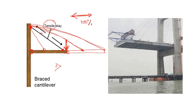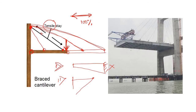With cables, we have eliminated the problem of the increasing cross-section depth. We have also eliminated the problem of the effective length kL, because unlike the braced member which was under compression, the cable is under tension — so the kL effect on strength is no longer a concern.